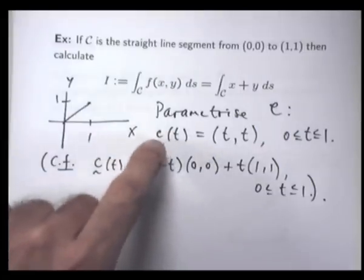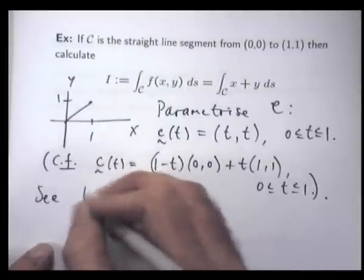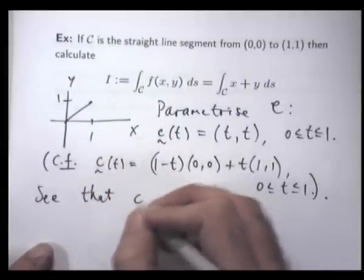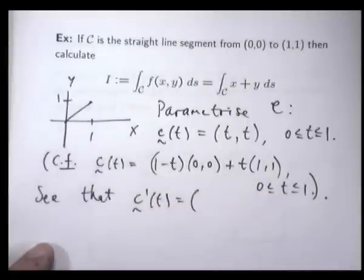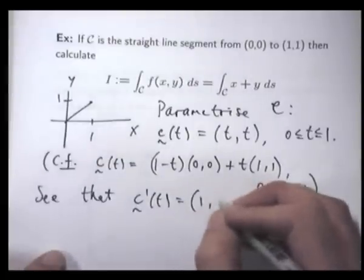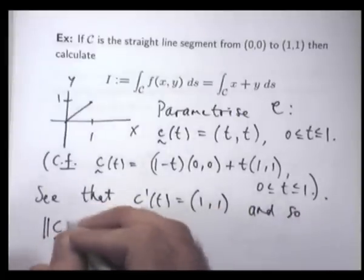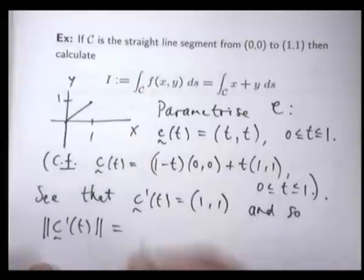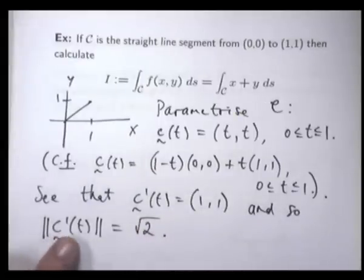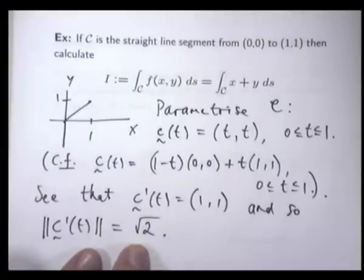All right, so what do we need? We need c' and then the magnitude of c'. So what's c' going to be? (1, 1). And so the magnitude of c' is going to be root 2. Now notice that there's no t dependency here. This is just a constant. In general, there will be t's here. This just works out quite nicely for this particular example.